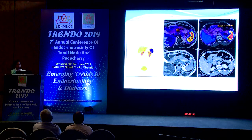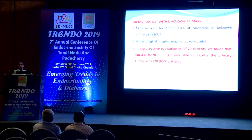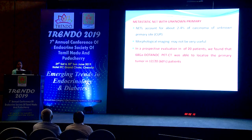A patient with recurrent episodes of hypoglycemia showed a classic pancreatic tail lesion on PET-MRI without metastasis, confirmed as insulinoma post-surgery. For metastatic NET with unknown primary, 2 to 4% of carcinomas of unknown primary belong to the NET group. In a prospective study of 20 patients, the primary was localized in 60% of cases — the most common site being midgut — and Gallium DOTA-NOC PET-CT also identified additional lymph node and bone metastatic sites.